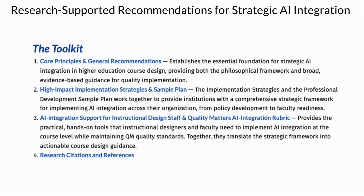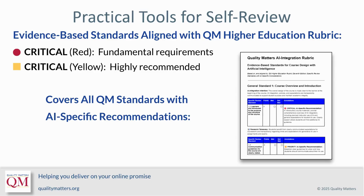Finally, research citations and references support every recommendation with current academic research from 2023 to 2025. The AI integration rubric, available in the third download section, covers all eight QM standards with AI-specific recommendations. Critical requirements are marked in red for quality and integrity, while yellow indicates highly recommended practices for effective integration.